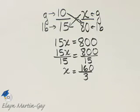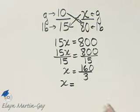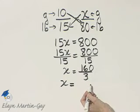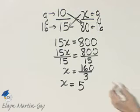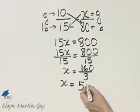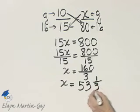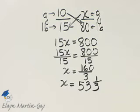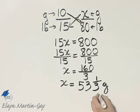Feel free to go off to the side and check my numbers here. Let's go ahead now and write this answer as a mixed number. I'm going to divide 3 into 160. 3 divides into 15 five times with a remainder of 1, and then 3 divides into 10 three times, that's 9, with a remainder of 1. So that's 53 and 1 third grams of medicine needed for the dog that weighs 80 pounds.